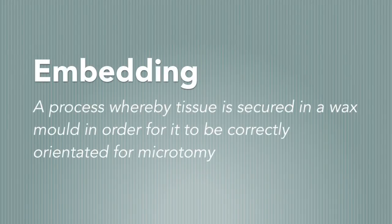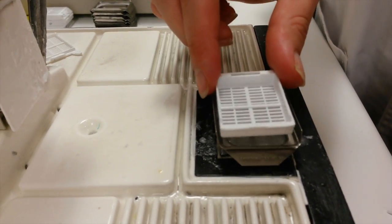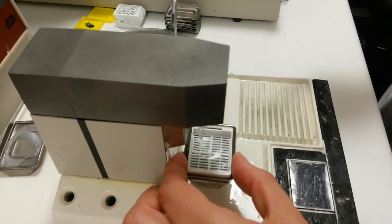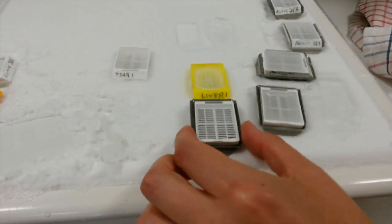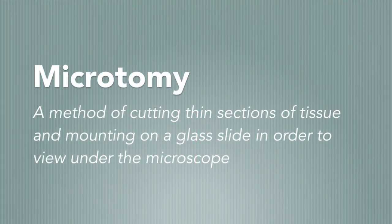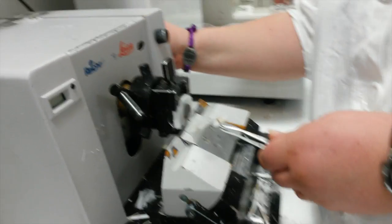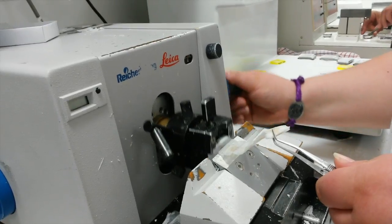Embedding is a process whereby tissue is secured in a wax mould in order for it to be correctly orientated for microtomy. The tissue is placed in the appropriate cassette at the correct orientation before being flooded with paraffin wax and transferred to a cold plate to solidify. Now we've secured our sections in paraffin wax, it's time to use the microtome. Microtomy is a method of cutting thin sections of tissue and mounting on a glass slide in order to view it under the microscope. A rotary microtome is able to cut sections of hardened paraffin wax containing the embedded tissue so thin that light is able to pass through it.